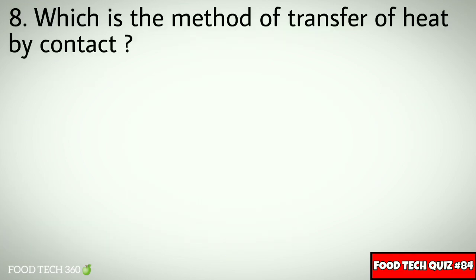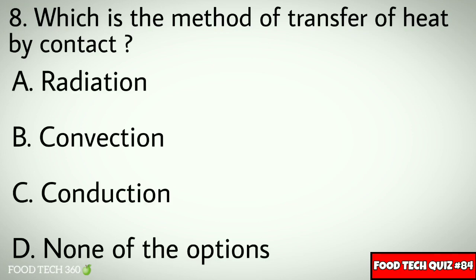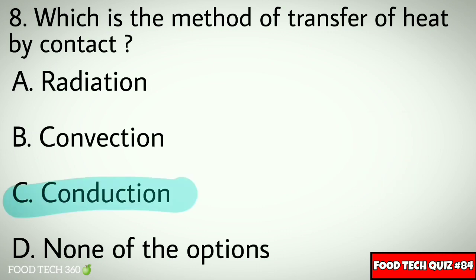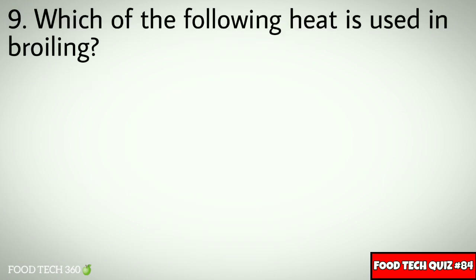Question number 8: Which is the method of transfer of heat by contact? Options: A. Radiation, B. Convection, C. Conduction, D. None of the options. Correct answer: C. Conduction.